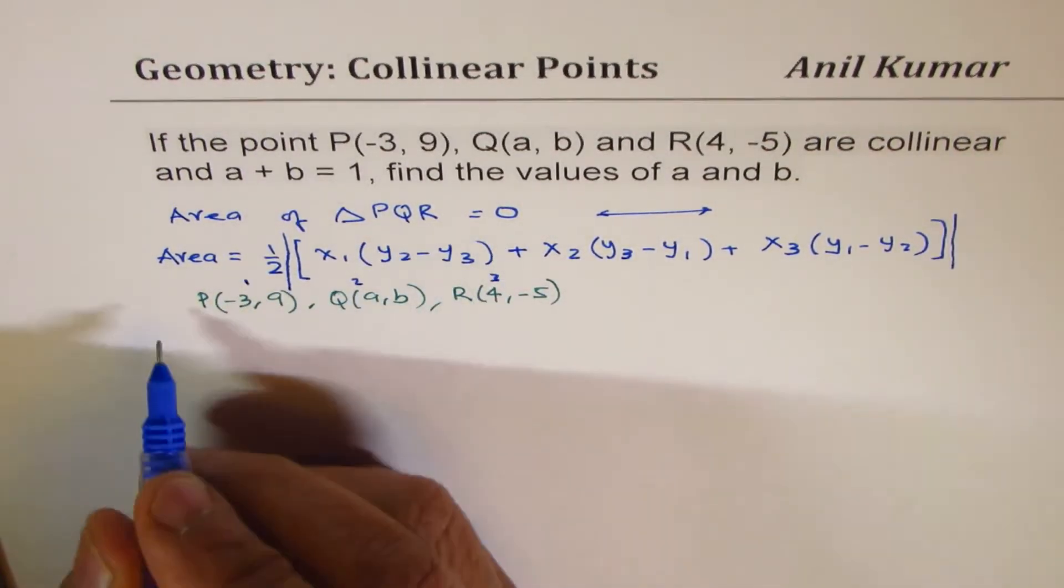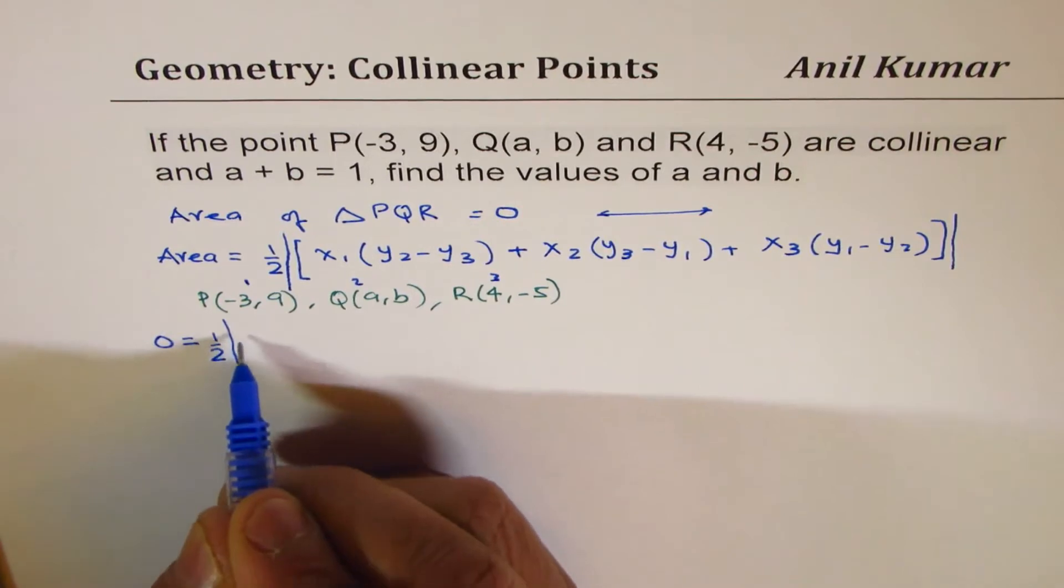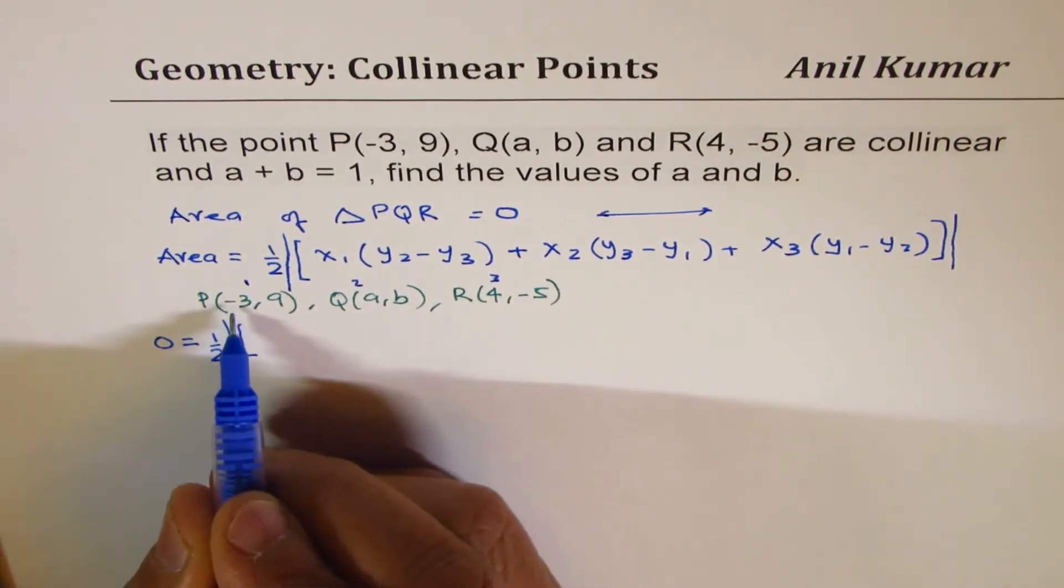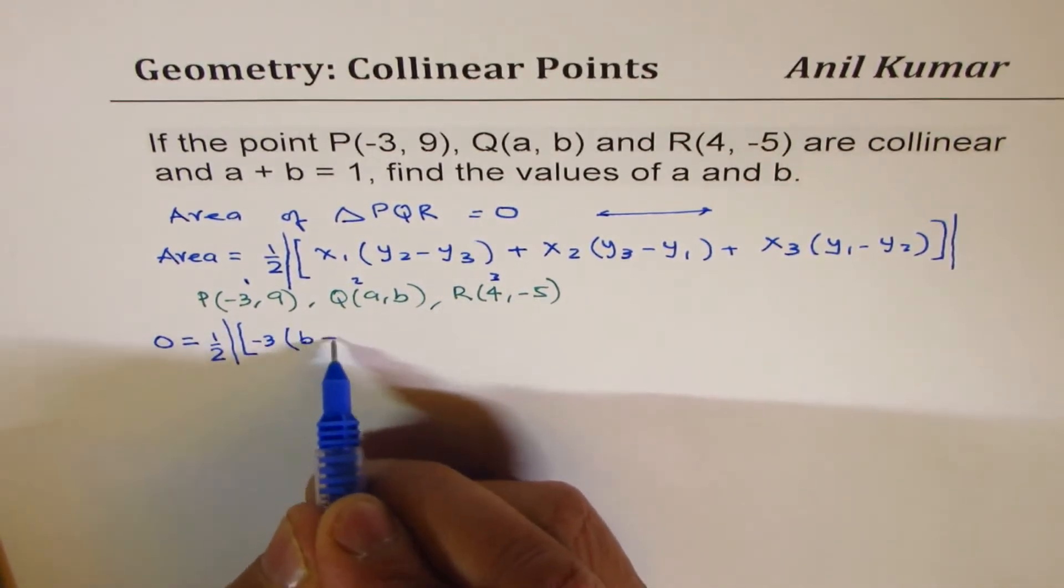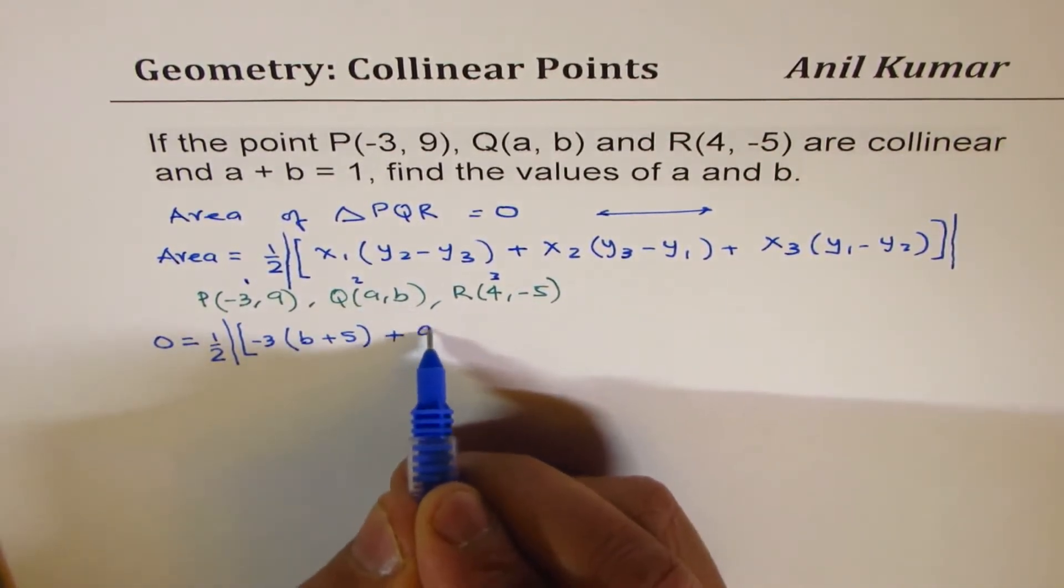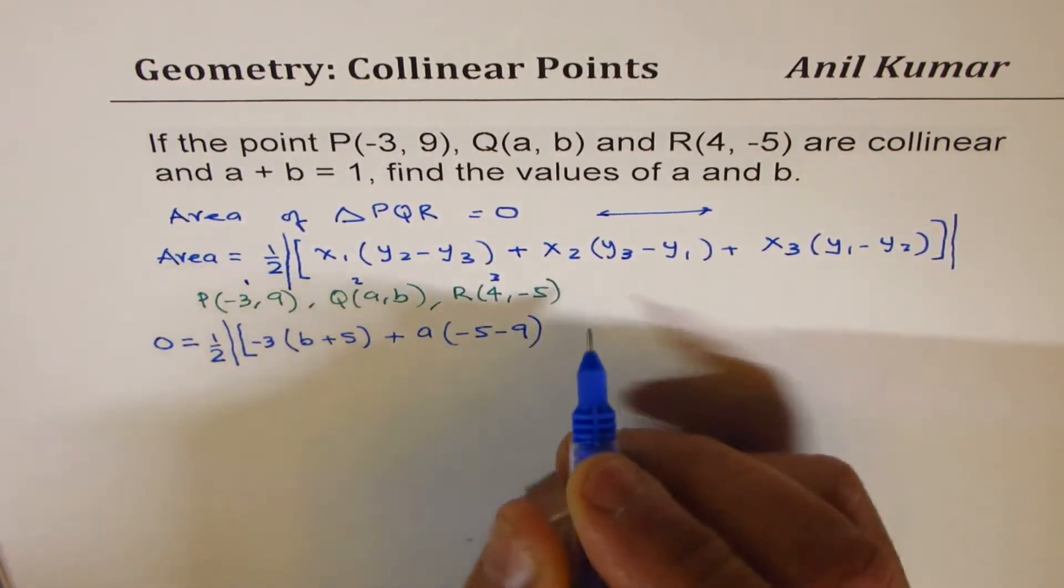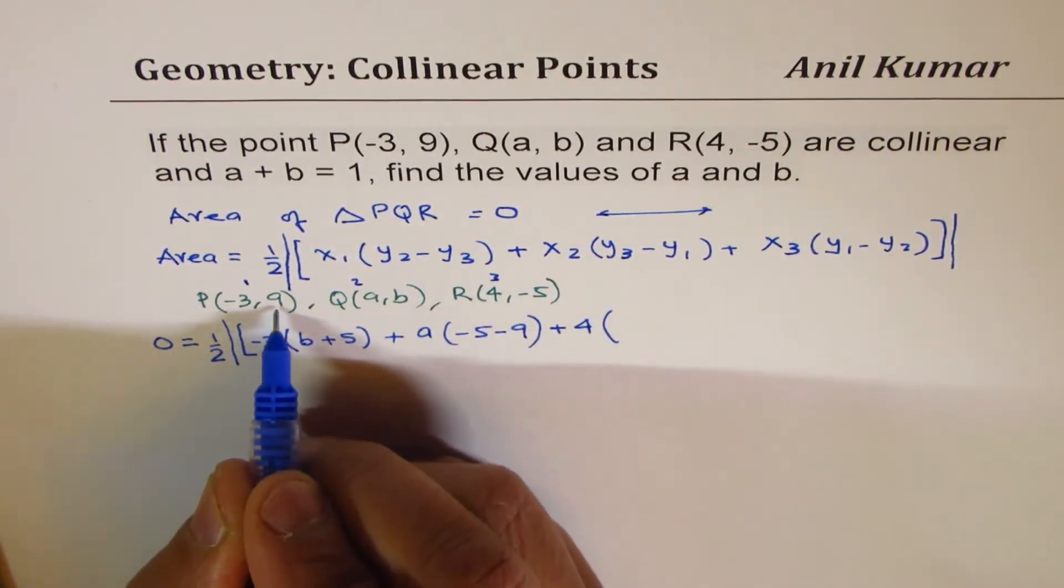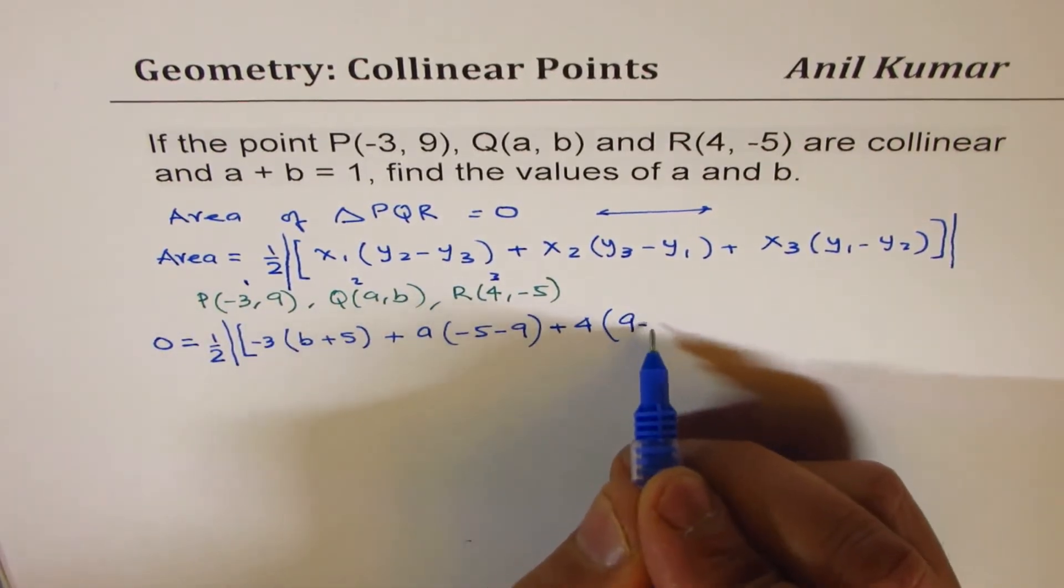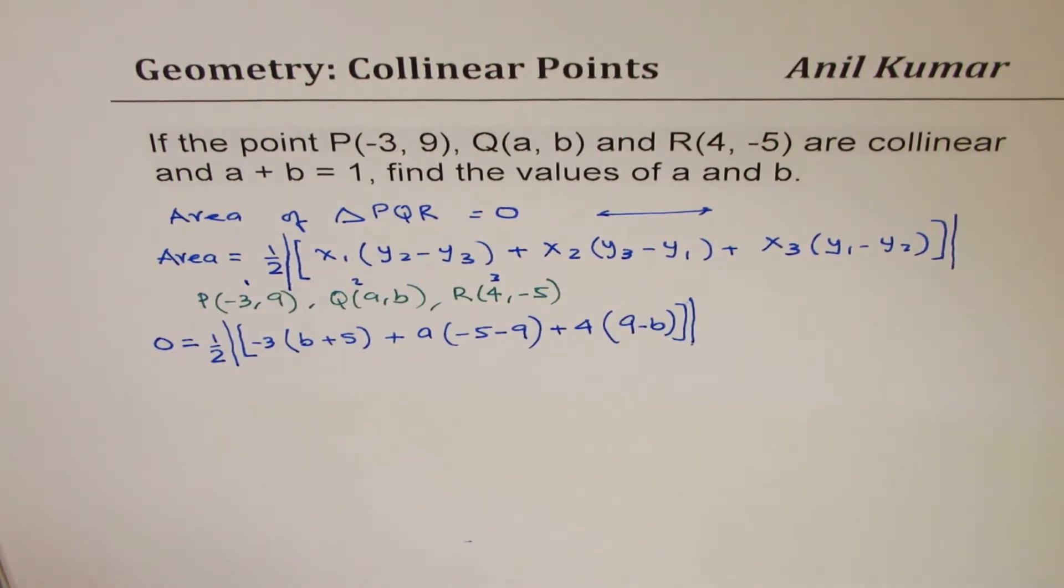Now area is 0. So let me start with writing 0 equals to half of absolute value of -3 times (B minus 5), that is (B plus 5), plus A times (-5 minus 9), plus 4 times (9 minus B). So that becomes your area and that is 0.